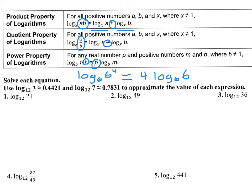For these problems, you're going to find a log that normally you'd need a calculator for, but you're just going to use these two pieces of given information. Whatever argument they give you, you need to break it into a product using only 3s, 7s, and powers of 12. For problem 1, 21 equals 3 times 7.